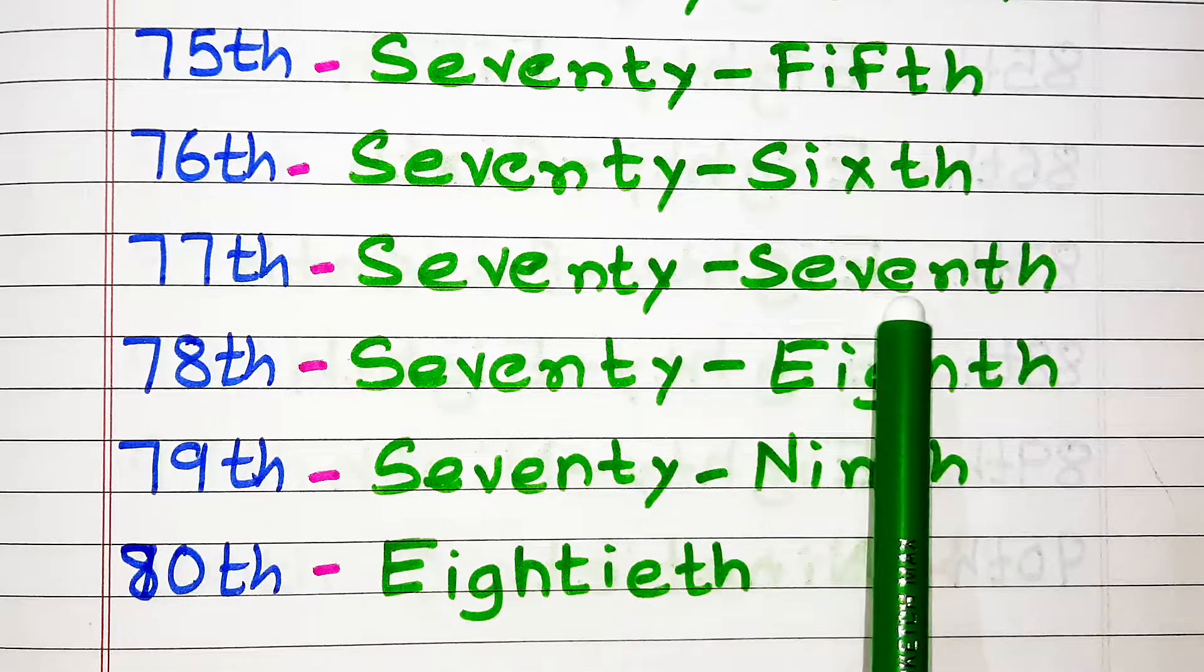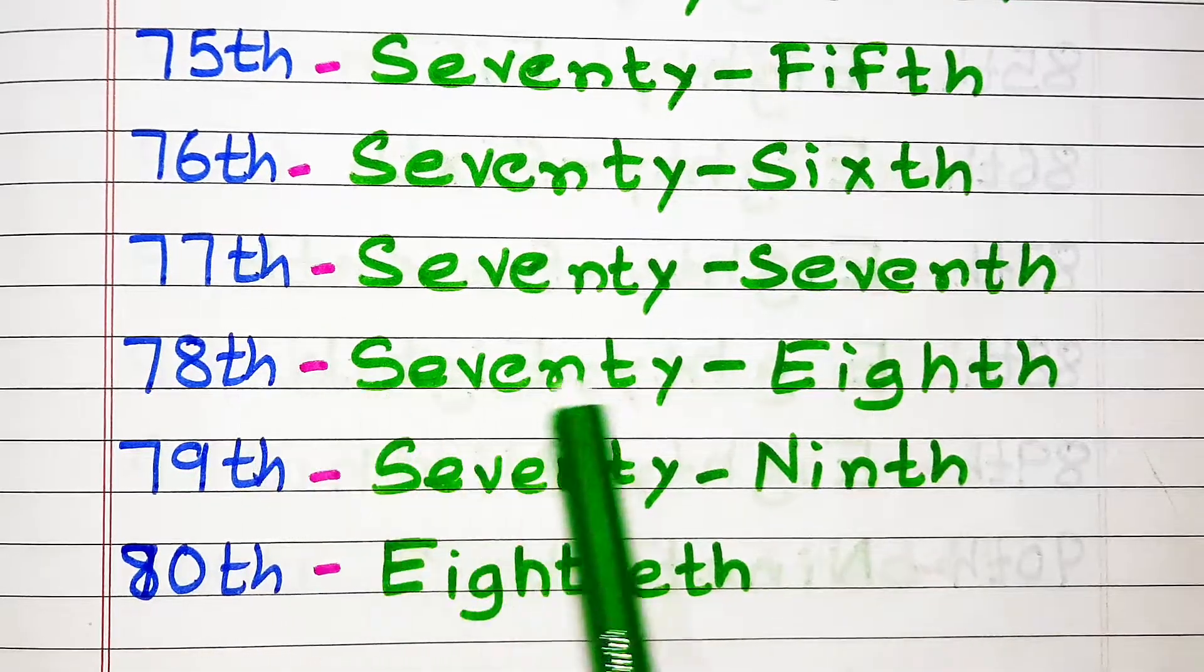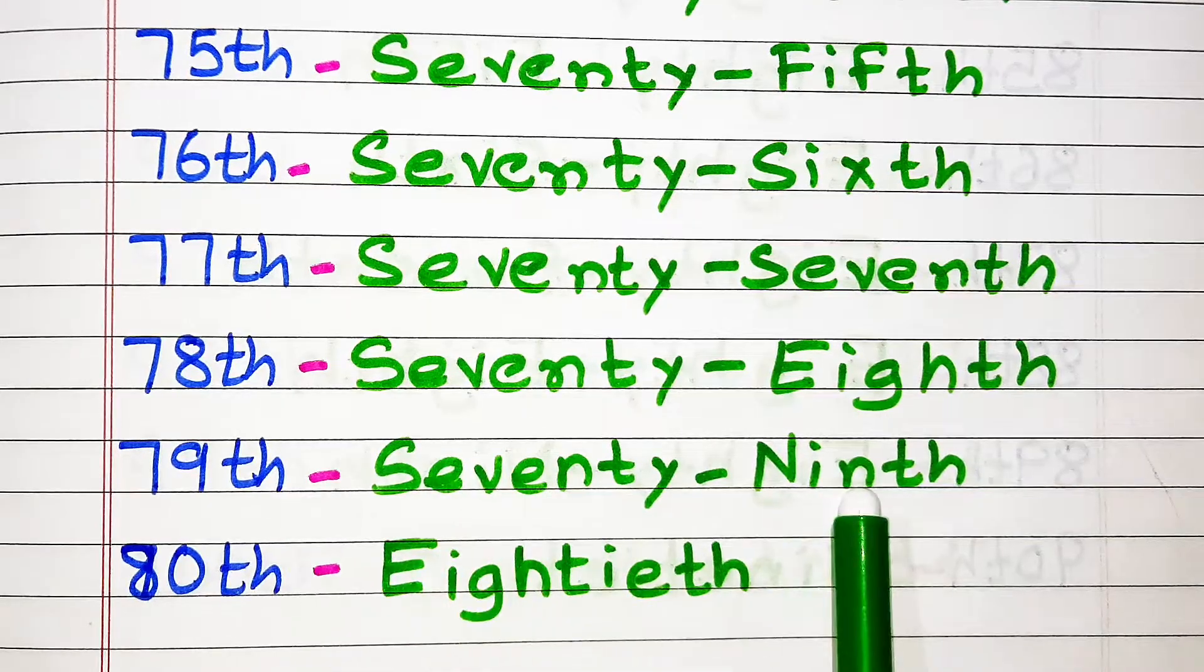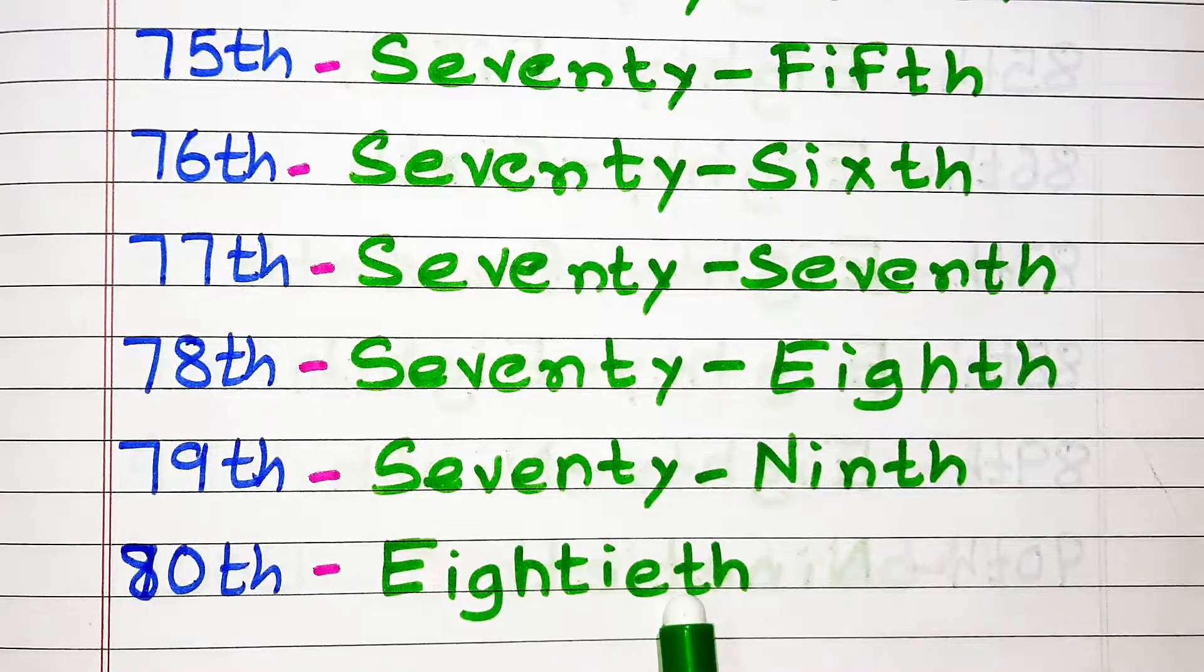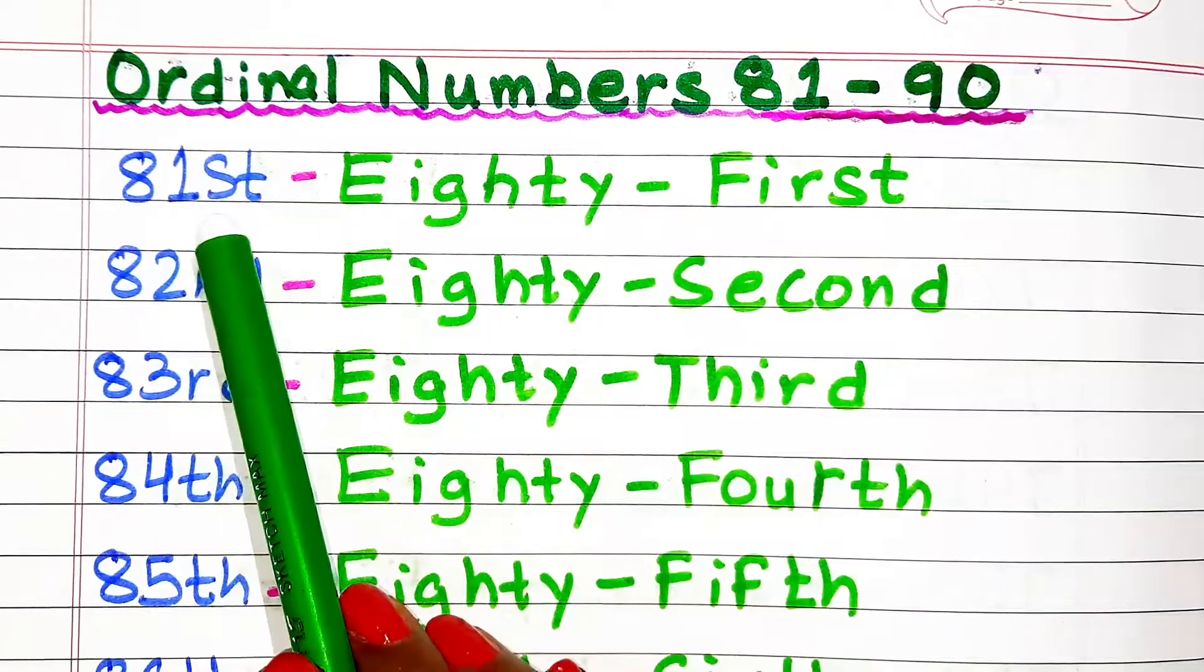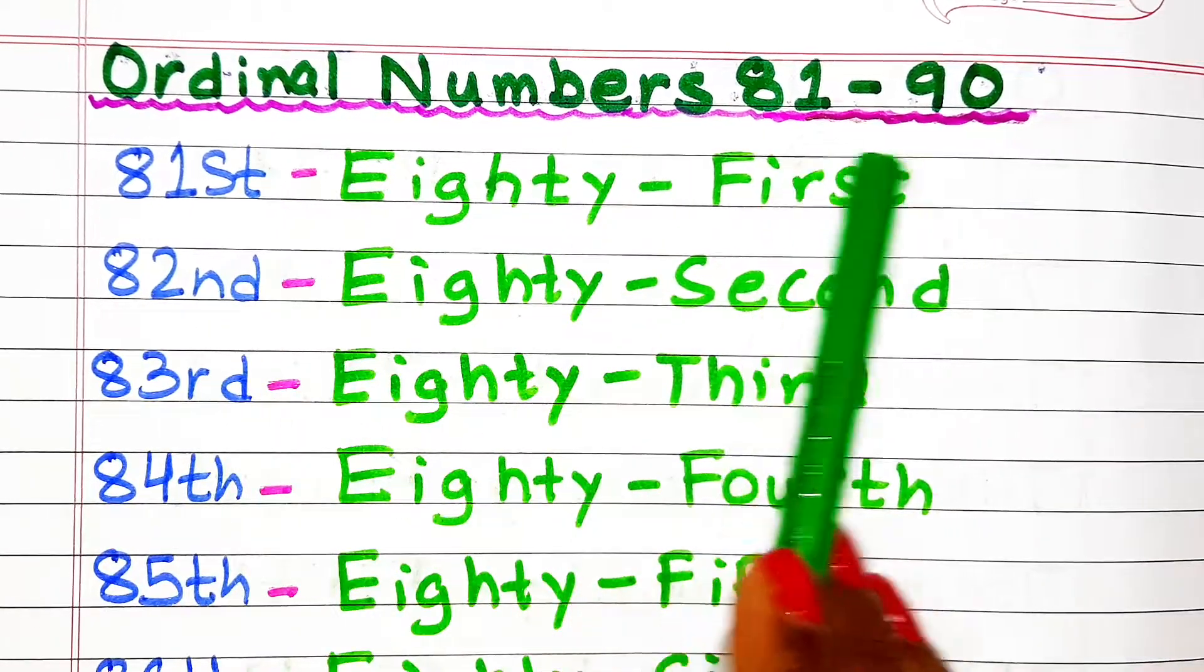Seventy-seventh, seventy-eighth, seventy-ninth, eightieth. Ordinal numbers from 81 to 90.